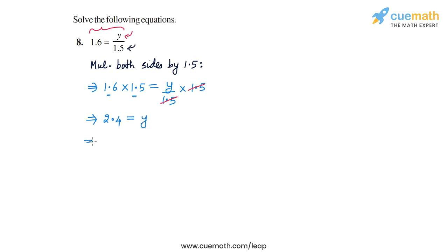So the solution of the equation is y is equal to 2.4, and we can verify that it is correct. If we substitute this value into the original equation, we will get 1.6 on the LHS. On the RHS we will get 2.4 divided by 1.5, and we can verify that this equals 1.6.